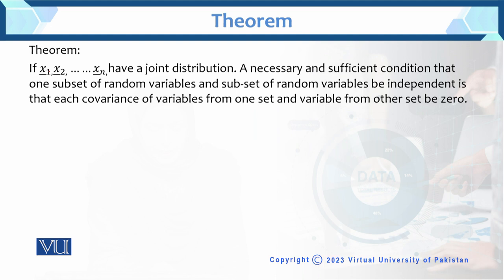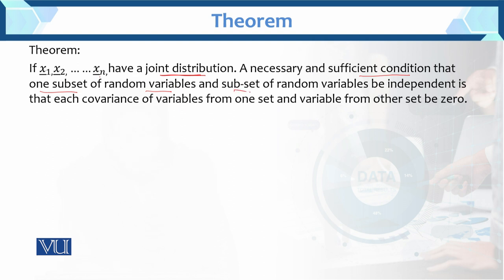If x1, x2 up to xn have a joint distribution, a necessary and sufficient condition that one subset of a random variable and the other subset of a random variable be independent is that each covariance of a variable from one set and a variable from the other set may be zero.